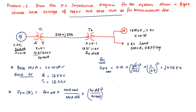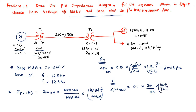Next, I am going to find out ZPU_new for transformer 1. The reactance is 0.1. ZPU_new = j0.1 × (20/25) × (12.5/12.5)². The kV values cancel, giving the per-unit impedance of transformer 1 as j0.08 per unit.